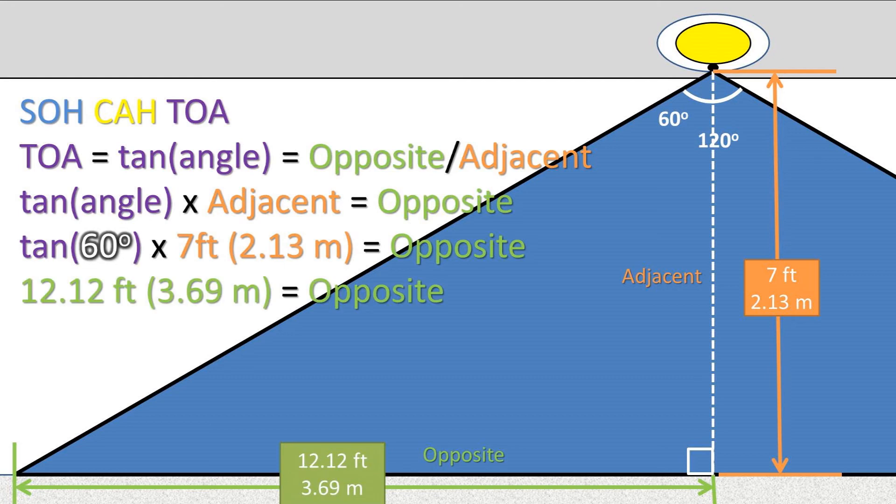Pressing the enter on our calculator, being sure it is in degrees, we get a distance of detection on the ground of 12.12 feet, or 3.69 meters, from the sensor's location projected on the ground.